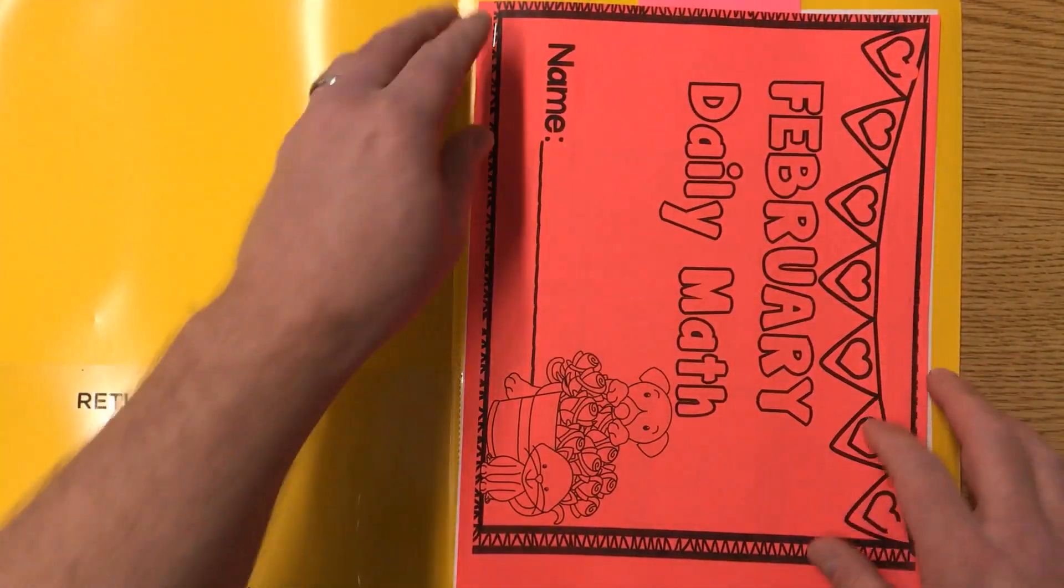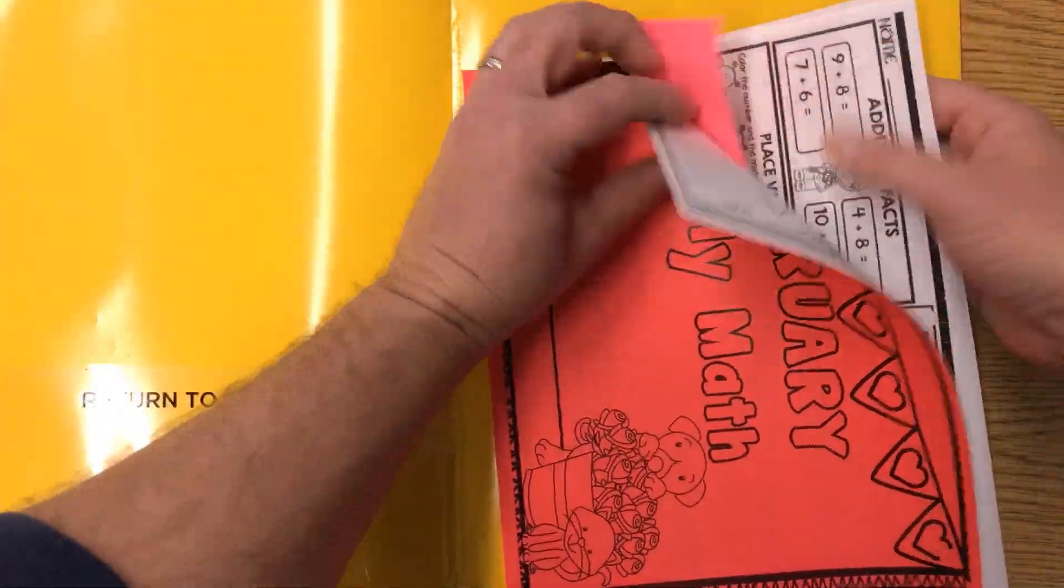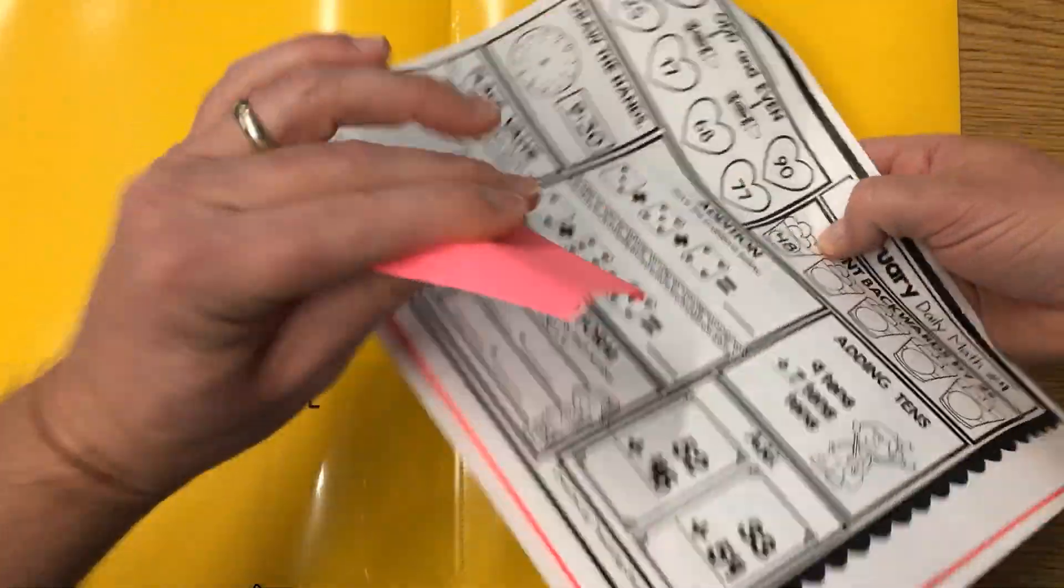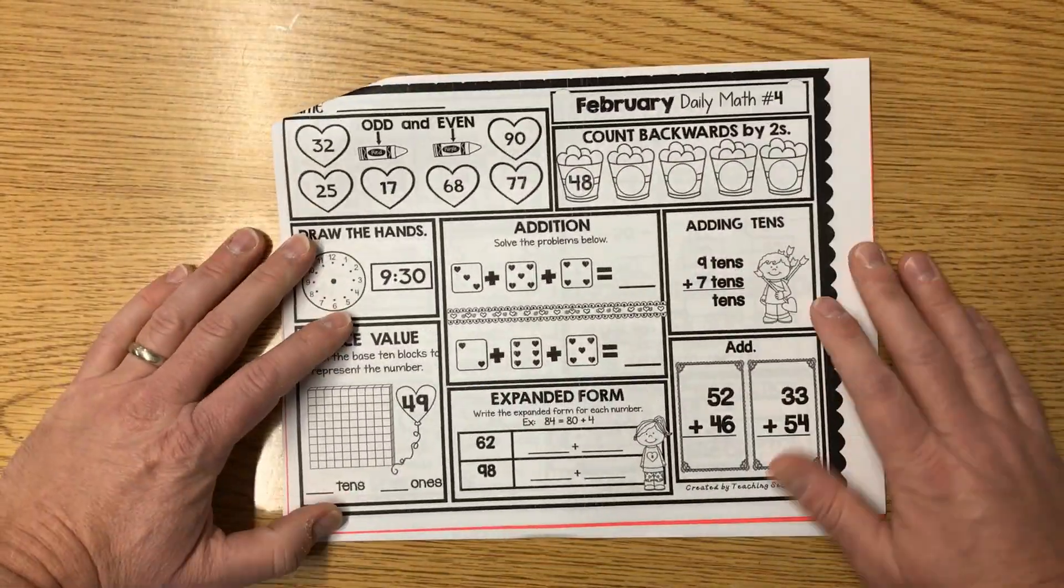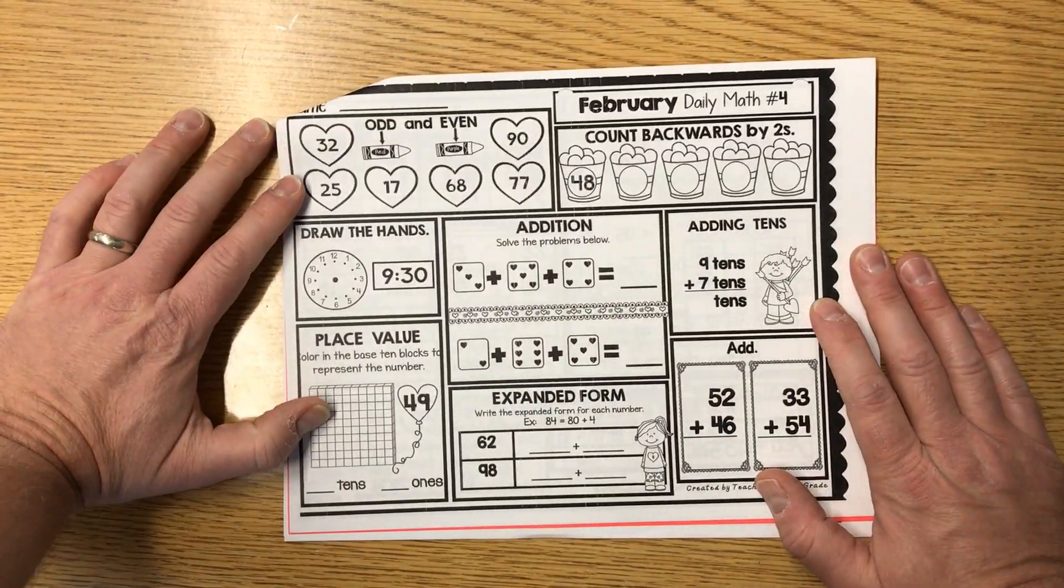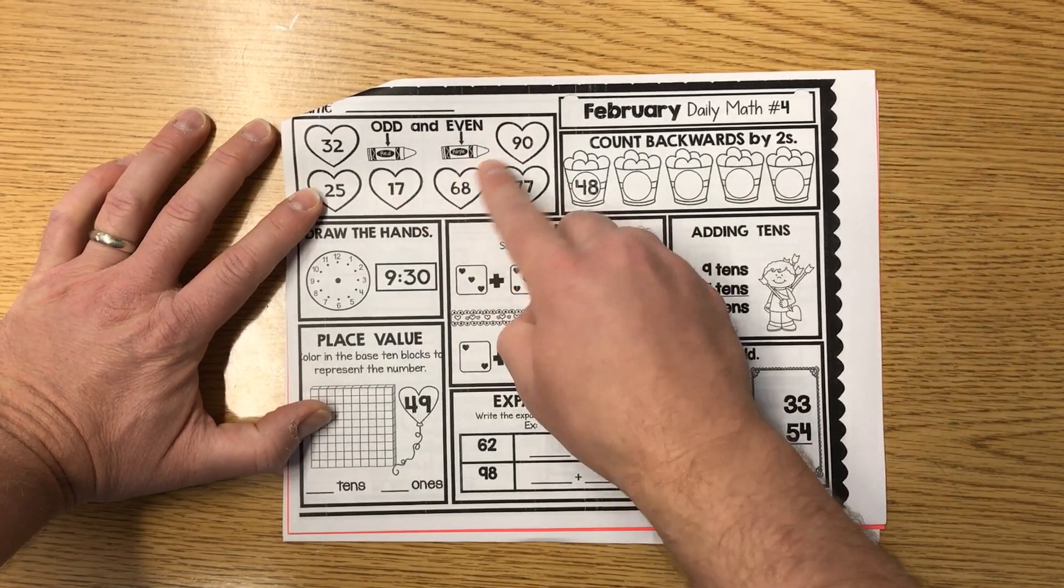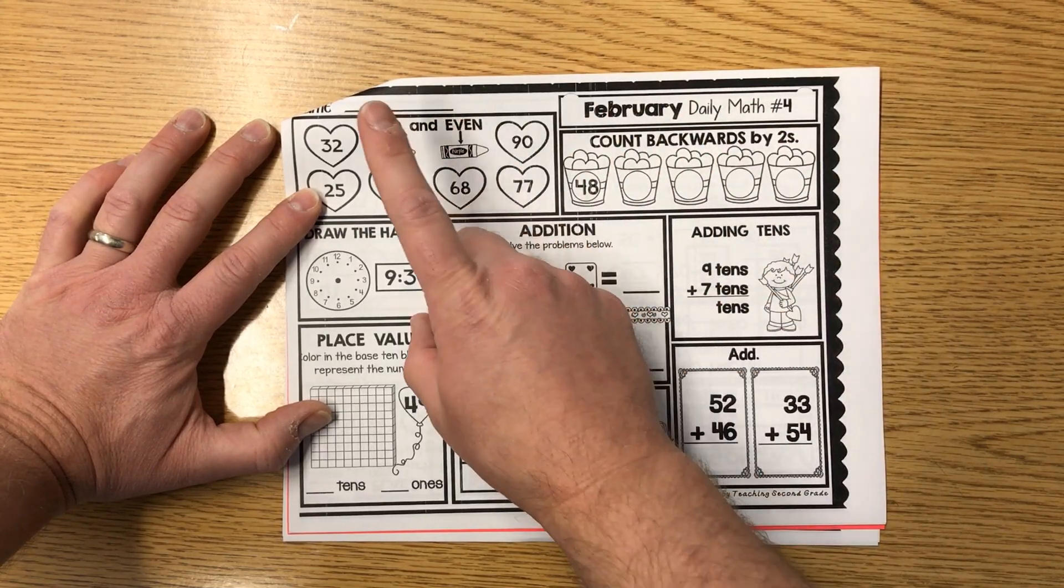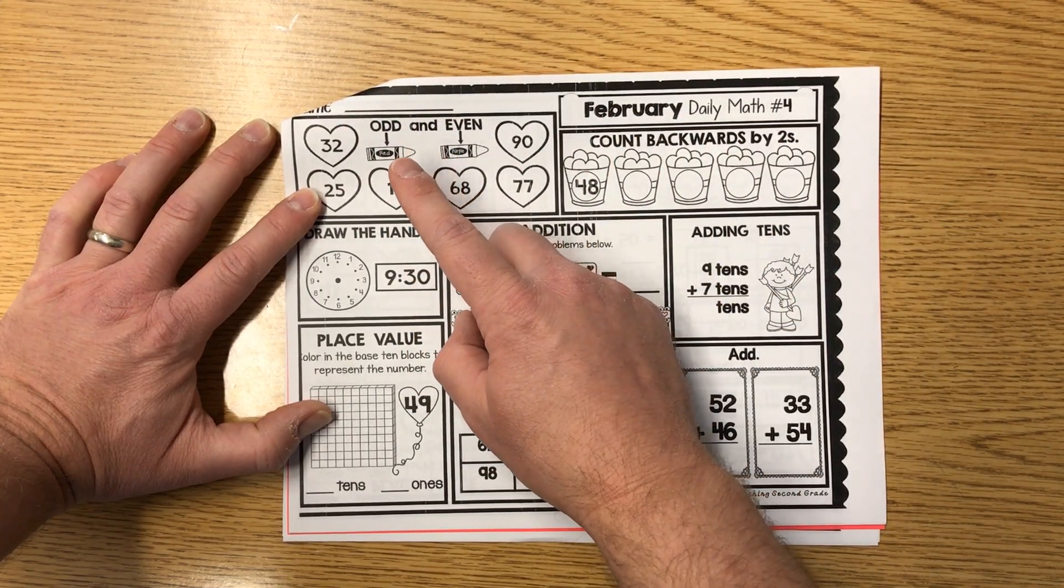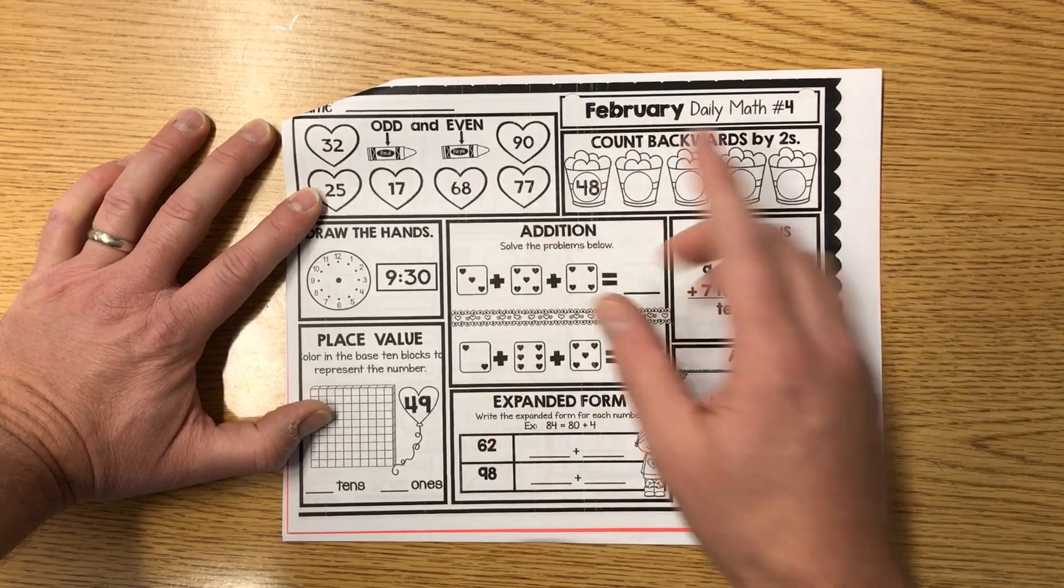All right, let's go ahead and look at our February daily math. You're going to go ahead and just do page four. First thing to do is make sure you guys write your name on the line. Let's see, odd or even - odd is red, even is purple. Make sure you cover those in. Remember, even numbers are those that go two, four, six, eight, zero. Odd numbers are one, three, five, seven, nine. That's in the ones place.